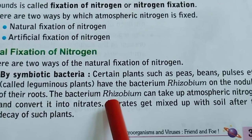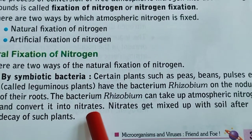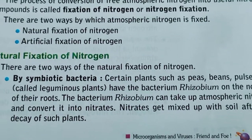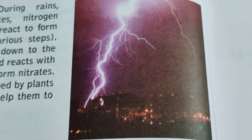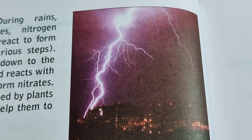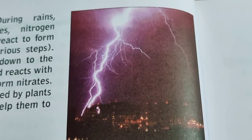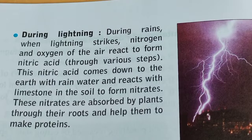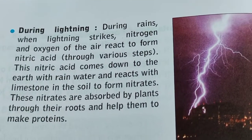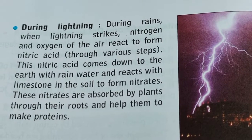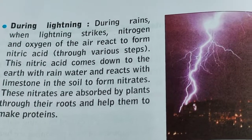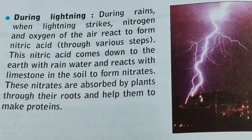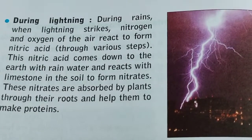Nitrates are soluble and easily absorbed by plants. Nitrates also get mixed into the soil after decay of leguminous plants. Nitrogen can also be fixed into the soil by an atmospheric method — that is, during lightning. When lightning strikes, nitrogen and oxygen in the air react to form nitric acid, which is also a component of acid rain. This nitric acid comes down to the earth with rainwater and reacts with limestone in the soil.